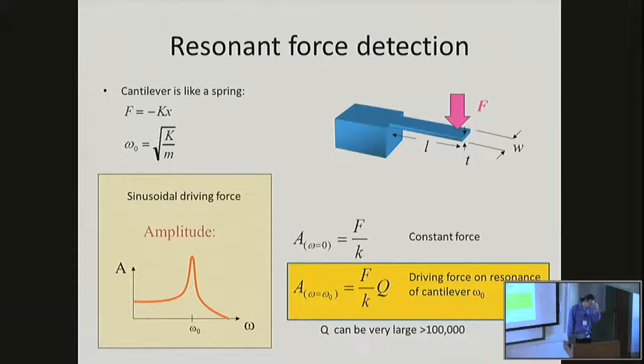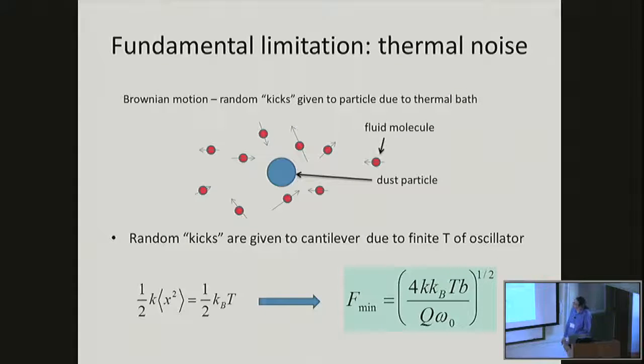One technique that people can use to look for these forces is resonant force detection. Here's a prototypical example I particularly like: the cantilever beam, basically a diving board. You apply some force to the tip, you get some displacement, you measure the displacement, and you can infer the force. You can take advantage of the natural resonance response, just like a mass on a spring. If I have a sinusoidal driving force and I'm excited on resonance, I get an enhancement of the amplitude by the mechanical quality factor of the system, which can be quite large if there's very low mechanical dissipation, over 10^5 or even higher. This gives me a nice handle where a tiny force can get transduced into a large amplitude that I have some hope of detecting.